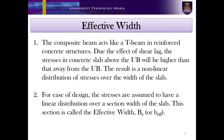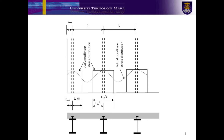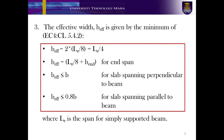Let me explain what it means by calculating the effective width. The composite beam acts like a T-beam in reinforced concrete structures. Due to the effect of shear lag, the stresses in the concrete slab above the web will be higher than that away from the web. The result is a non-linear distribution of stresses over the width of the slab. For ease of design, the stresses are assumed to have a linear distribution over a section width of the slab. This section is called the effective width, b or b effective. The figure shows the assumed linear and non-linear stress distribution of the concrete slab. The effective width is given by the minimum of EC4 clause 5.4.2, in which LE is the span for a simply supported beam.